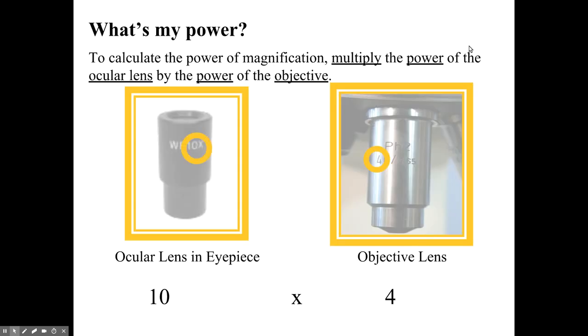The total magnification of what you're viewing is found by multiplying the power of the ocular lens in the eyepiece by the power of the objective lens. So in this case if the ocular lens is 10 and the objective lens is 4, we would do 10 times 4 which gives us 40.